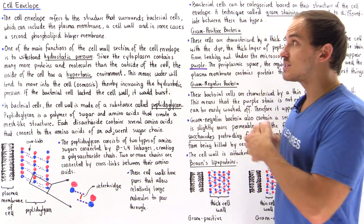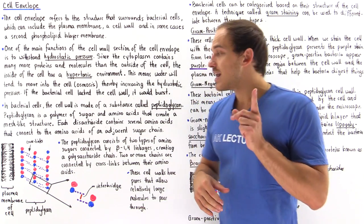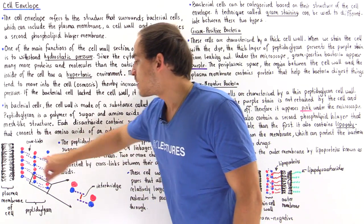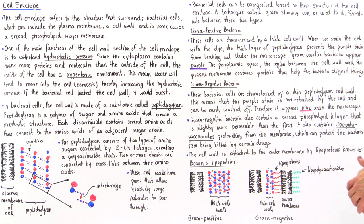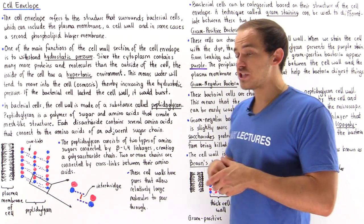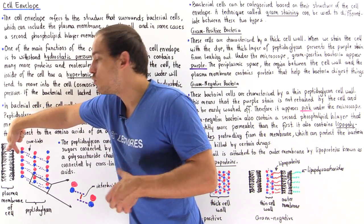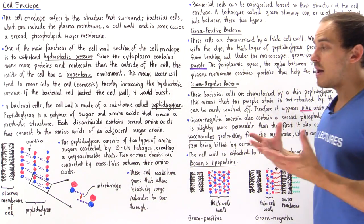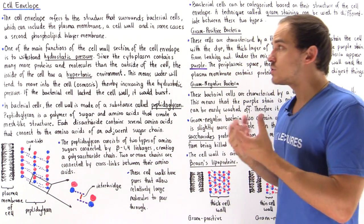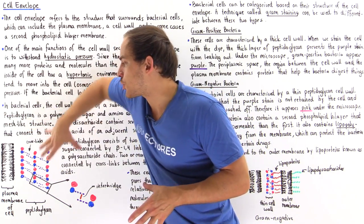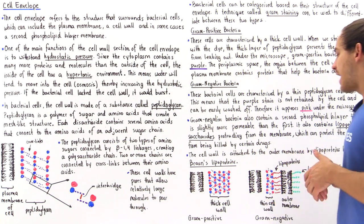One important drug target in the cell envelope is peptidoglycan. We can develop drugs that break the cross-links between polysaccharide chains within the peptidoglycan, killing the bacterial cell. Other drugs can break the bonds between the disaccharide units — between the two sugar types. Once we break the cell wall, it can no longer resist the hydrostatic pressure of the cell's internal environment, and the bacterial cell will burst.